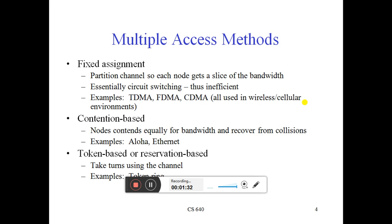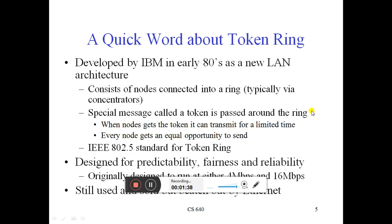Now we take the example of the token ring protocol, which has already been discussed. How it works — we are looking at the LAN architecture. In the early 90s, when this type of technology started delivering messages to the proper destination, there were different types of switching network techniques for delivering messages.